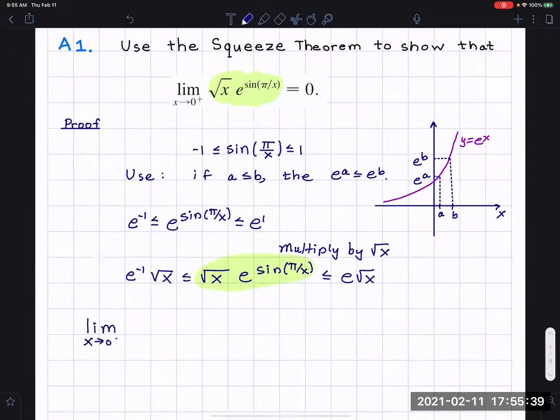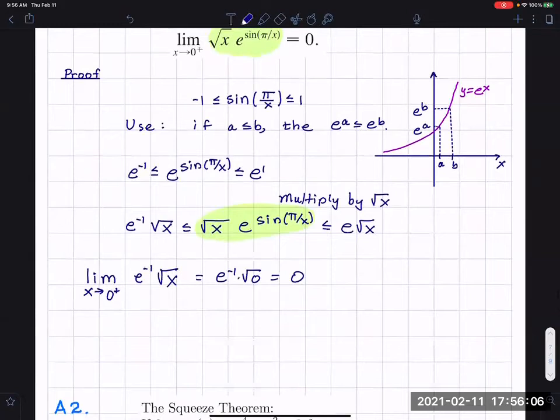Limit as x approaches zero from the right. E to the minus one square root of x. We say x approaches zero from the right because we cannot put in negative values for square root. E to the minus one is just one over e, and e is between two and three, that's around 2.7. So this is going to be e to the minus one square root of zero, which is just zero. And then we get limit x approaches zero from the right of e radical x, and just plug in zero. This is using the limit laws and the fact that we can use direct substitution when we have radicals. So I get zero.